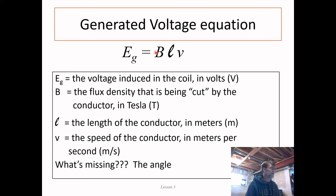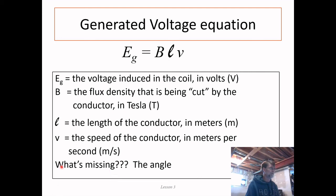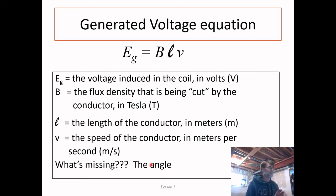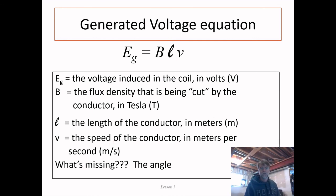The induced voltage equals B × L × V, where B is the flux density, L is the length of the conductor, and V is the velocity. The previous slide had four items but the equation only has three — the angle isn't missing, it's embedded in V: the cutting angle speaks to how many lines of flux are cut per unit time.